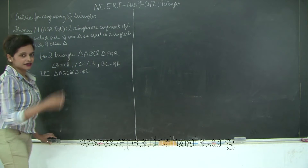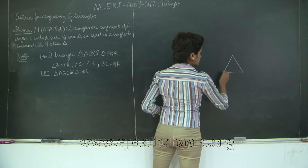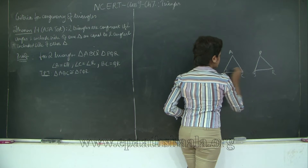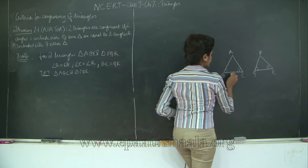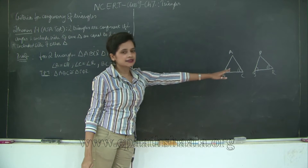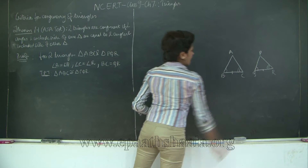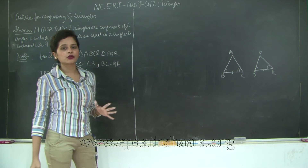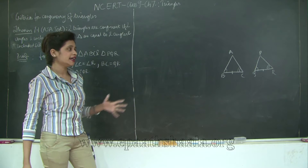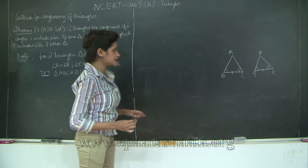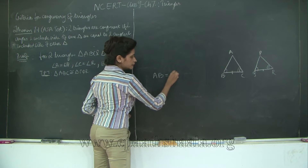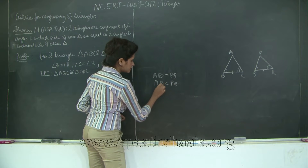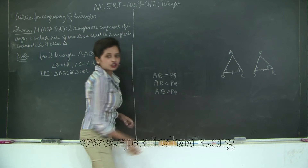We are going to consider three cases and this theorem will be proved based on the SAS test of congruence, which we learned previously as an axiom. The three cases are: Case 1 — AB equals PQ; Case 2 — AB is less than PQ; and Case 3 — AB is greater than PQ.